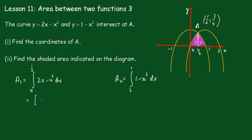Integrating 2x minus x squared, we get x squared minus x cubed over 3, evaluated between 0 and one half. Substituting in, that gives one quarter minus one twenty-fourth, minus nothing, which equals 5 twenty-fourths.